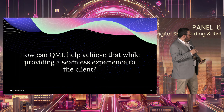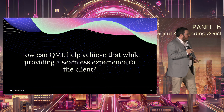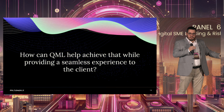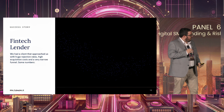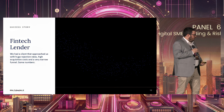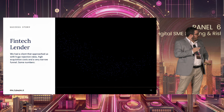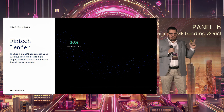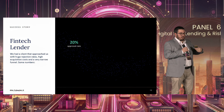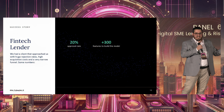So how can quantum machine learning — QML — achieve this while providing a seamless experience, so the company isn't waiting two or three days for a decision? Let me explain with an example. We had a client that approached us with huge rejection rates, high acquisition costs, and a very narrow funnel — a lot of applicants started, but very few actually got to the loan. They had a 20% approval rate, more than 300 features to build the model, and about 10 million euros per month in this portfolio. They had data — it wasn't that they didn't have it.